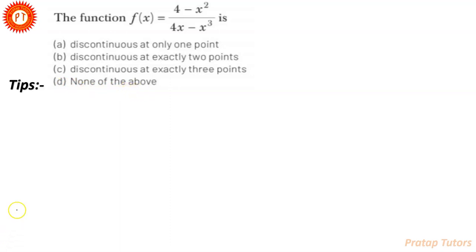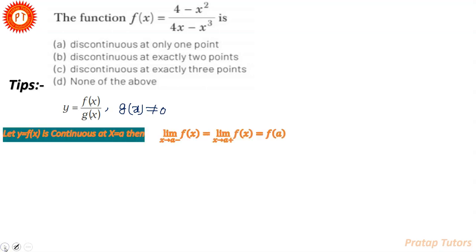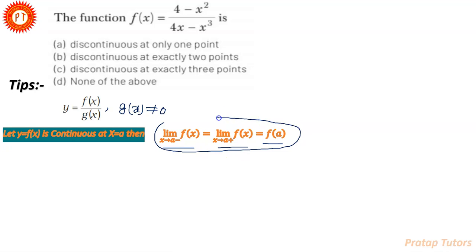इस question को solve करने से पहले, कुछ basic concepts समझते हैं। मान लो कि हमारे पास एक function दिया हुआ है y = f(x)/g(x), तो ये function तभी defined होगा जब इसकी denominator 0 के equals नहीं होगी। और दूसरा concept ये है कि कोई function y = f(x) किसी point a पे continuous तभी होगा जब इसकी left hand limit और right hand limit, और साथ ही साथ उस point a पे function की value — ये तीनों आपस में equal हों और finite हों।